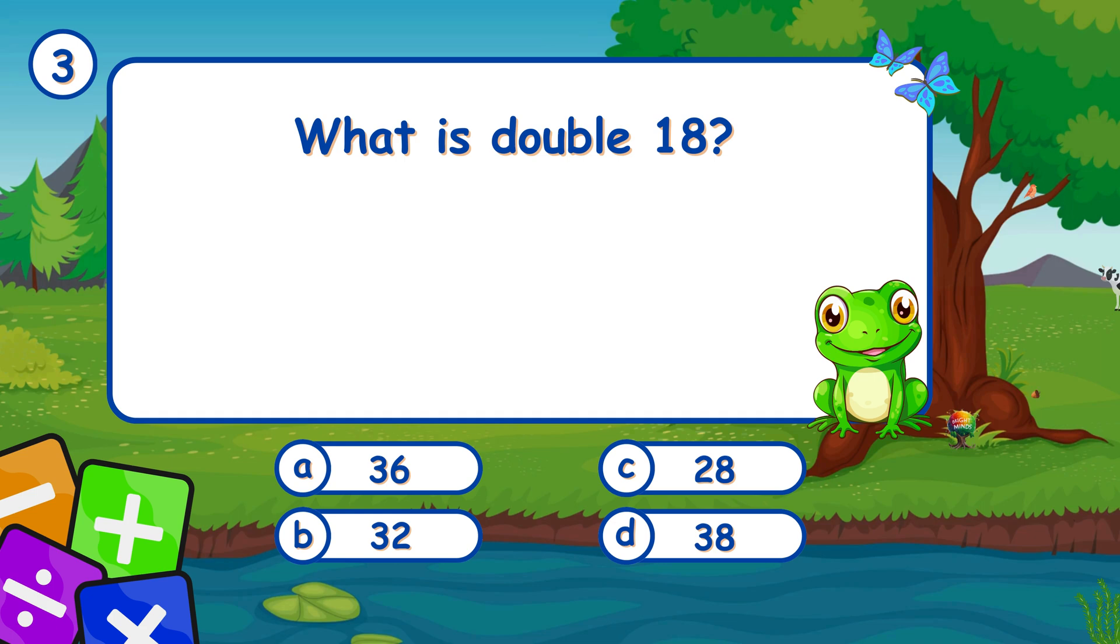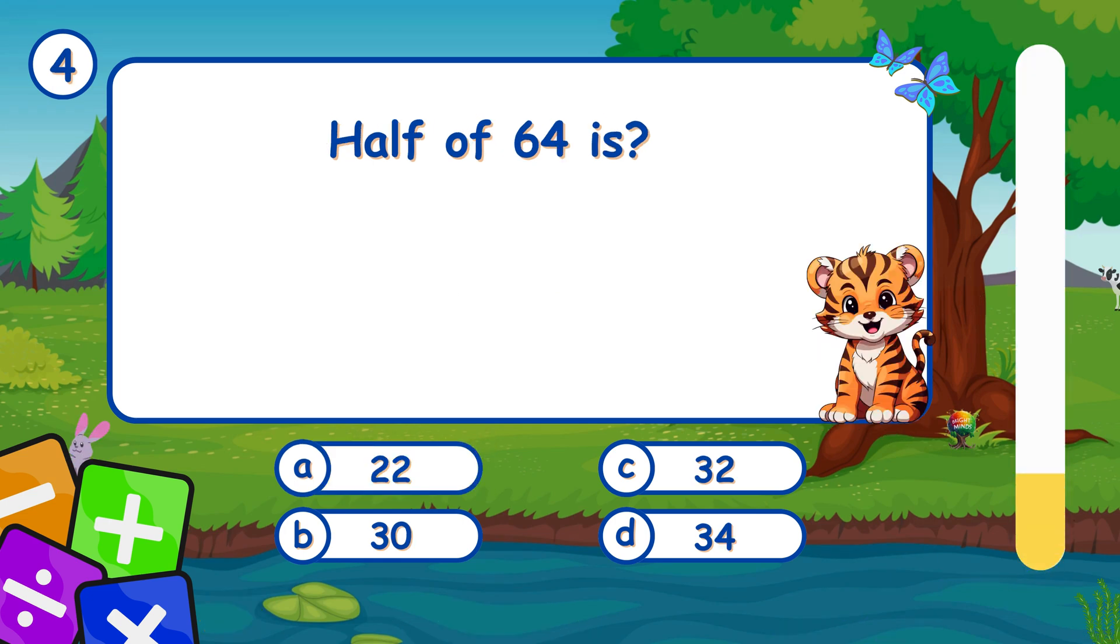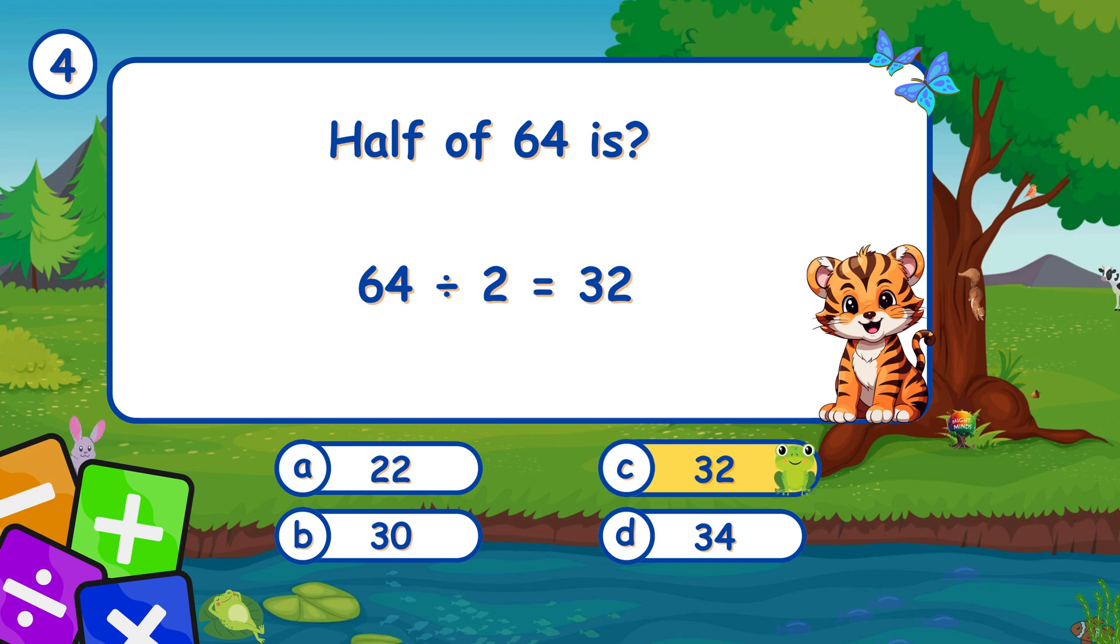What is double 18? It's A, 36. Double of 18 is 36. Half of 64 is... It's C, 32. Half of 64 is 32.